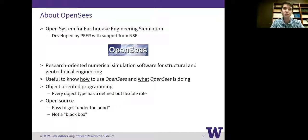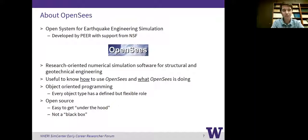OpenSees uses object-oriented programming. Every object in OpenSees — whether it's an element, a material, or a geometric transformation — has a predefined role, but it's flexible, and you can add to and manipulate those objects in different ways. The other key component is that it's an open source framework, so it's really easy to get under the hood of OpenSees. You can look at the source code — it's not a black box — and if you're able to follow what's going on in the source code, you can really understand what it's doing.